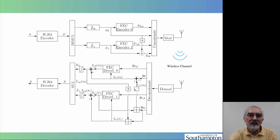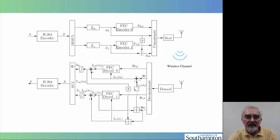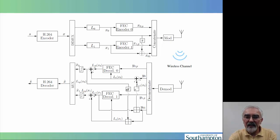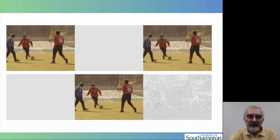Therefore every effort has to be made to recover the base layer. If we iteratively exchange extrinsic information between the two layers at the receiver side, using the sophisticated information path described in intricate detail in the paper, then the chances are that we can still recover the base layer as well. The proof of the pudding is in the eating, so let's look at the overall video quality in the form of a simple stationary video demonstration scenario.